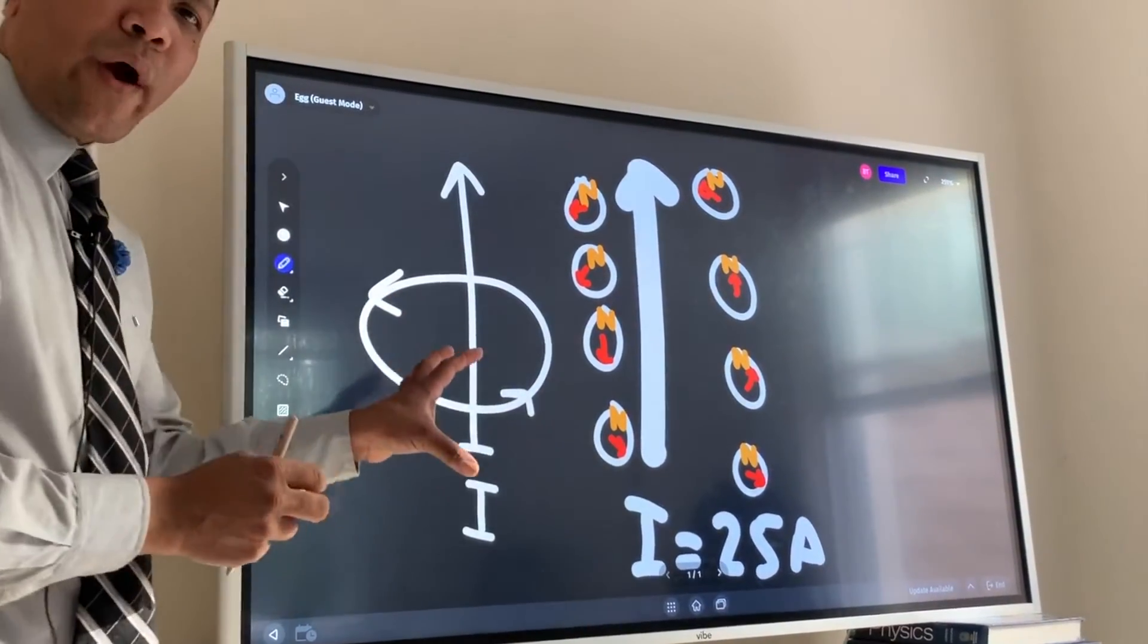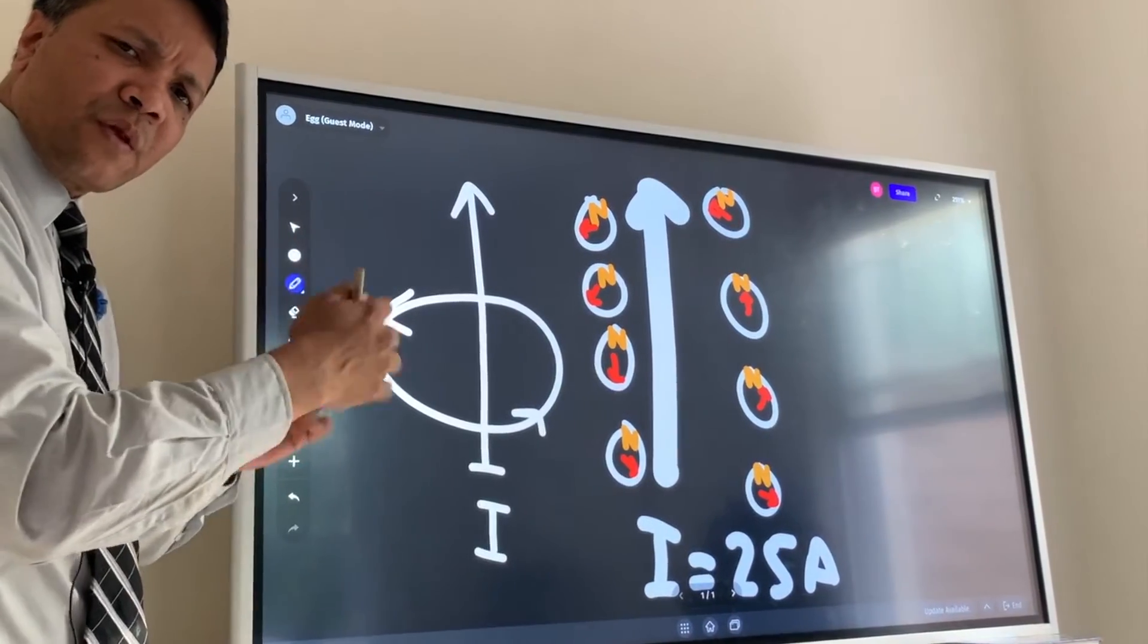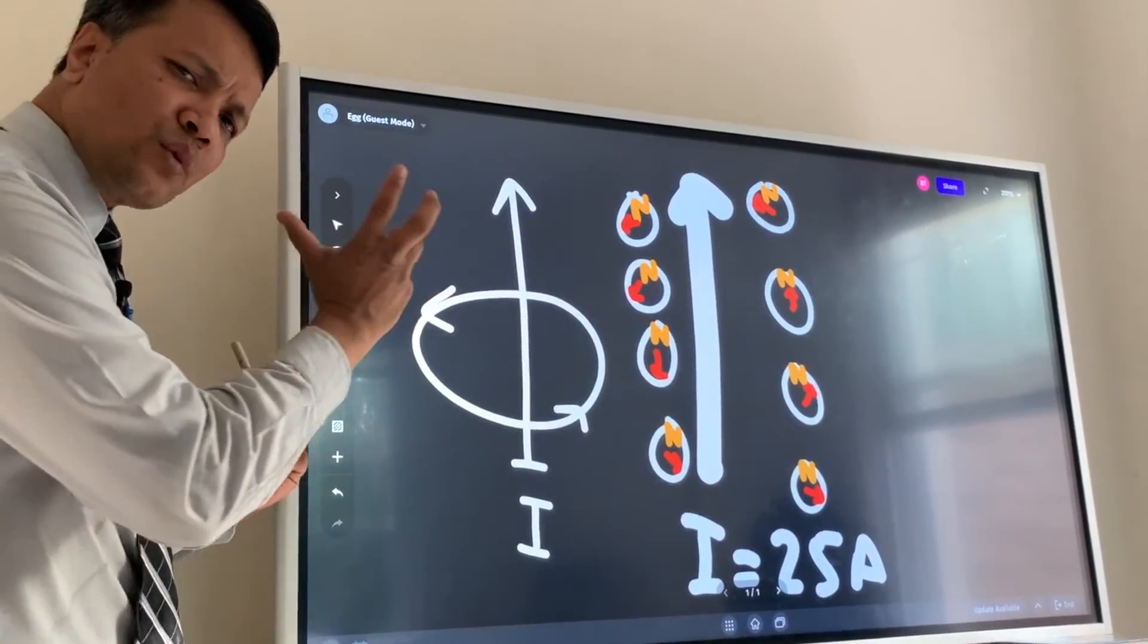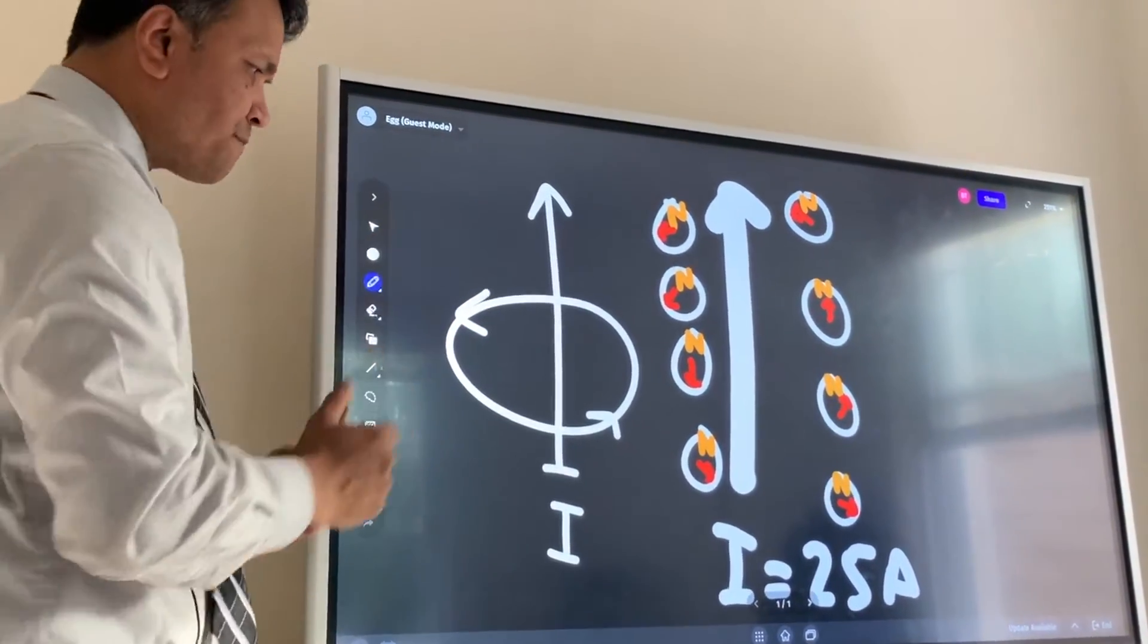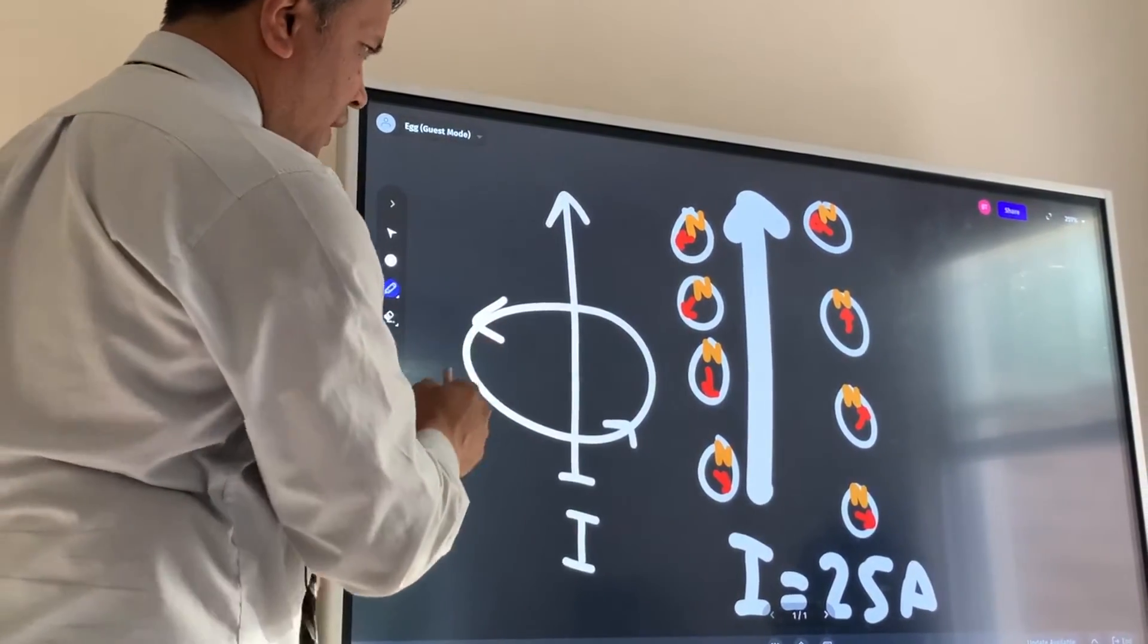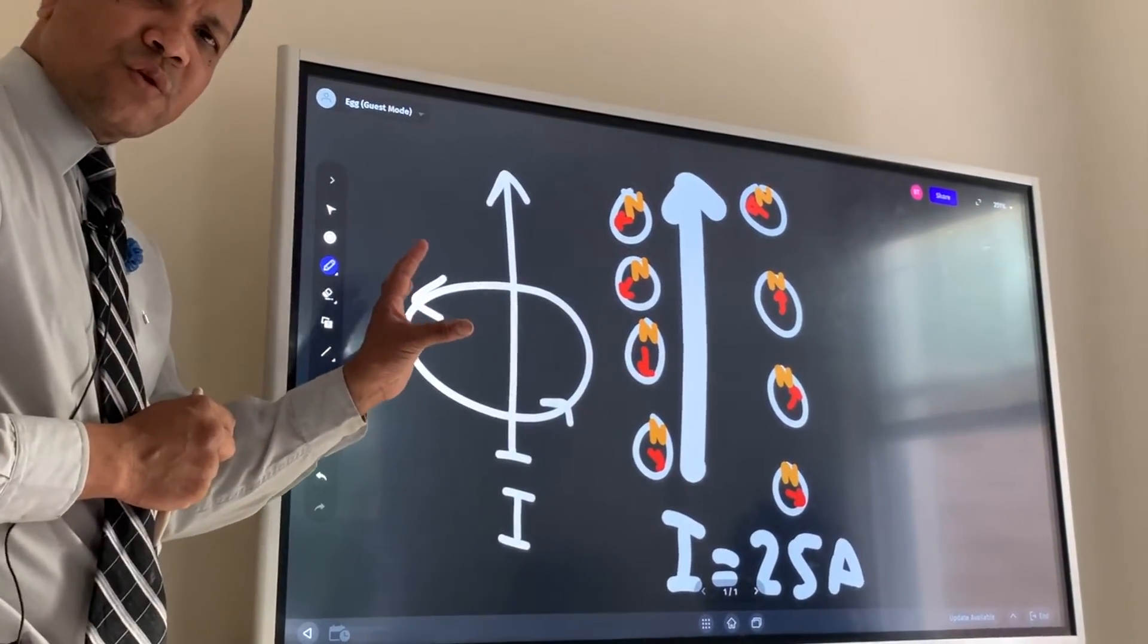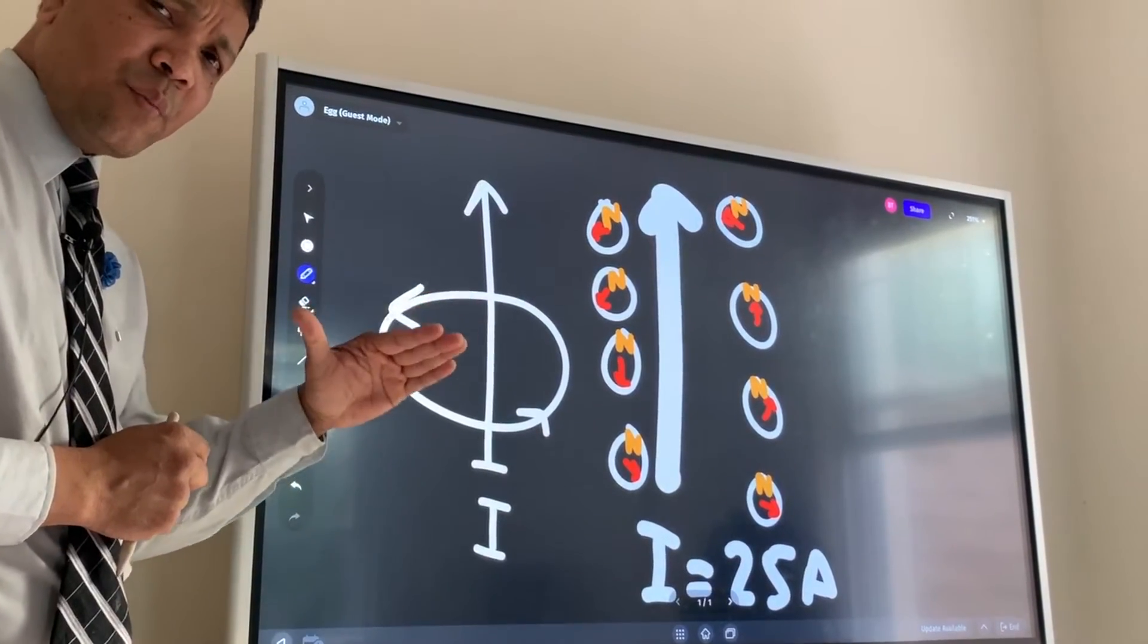So the wire is in the center and there is a circle, and the magnetic field is around the wire. And that's why when we use the equation, we see 2πr on the bottom.